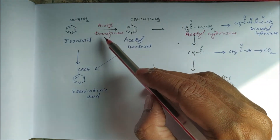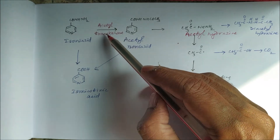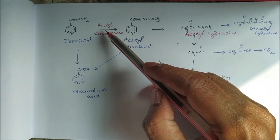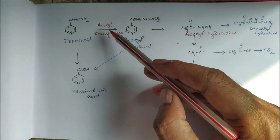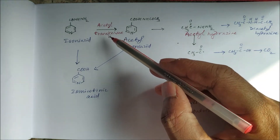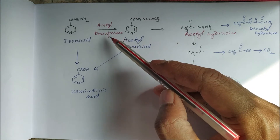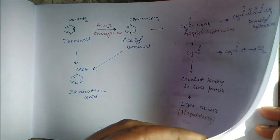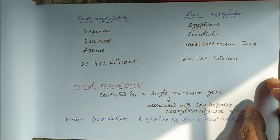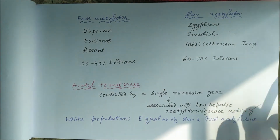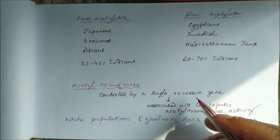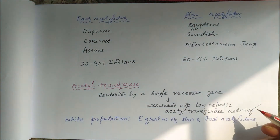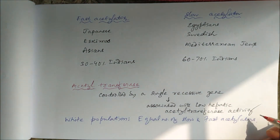Acetyltransferase is not uniformly present across all populations worldwide, and this variation is why there is genetic variation in isoniazid metabolism. This acetyltransferase enzyme is controlled by a single recessive gene, which is associated with low hepatic acetyltransferase activity.